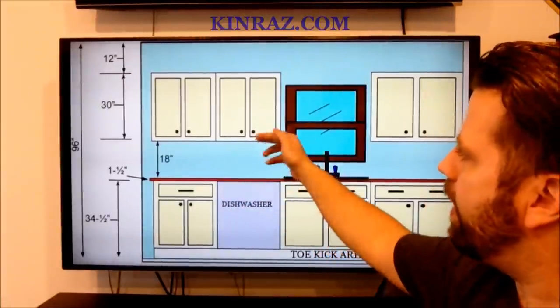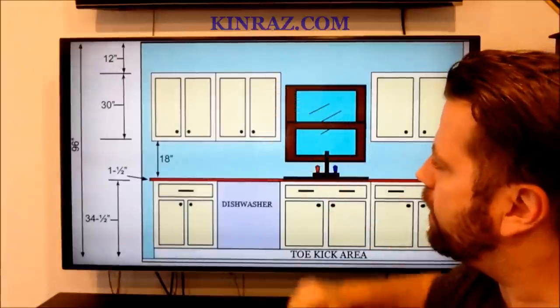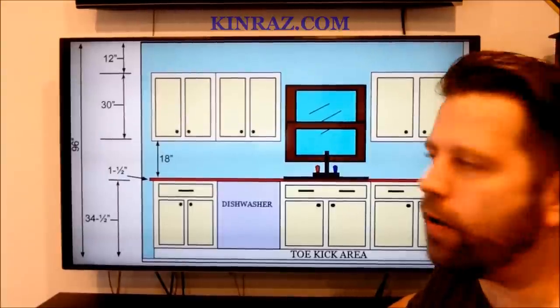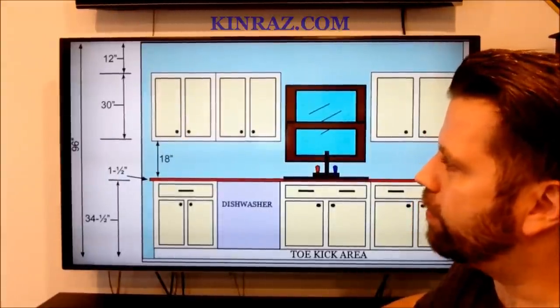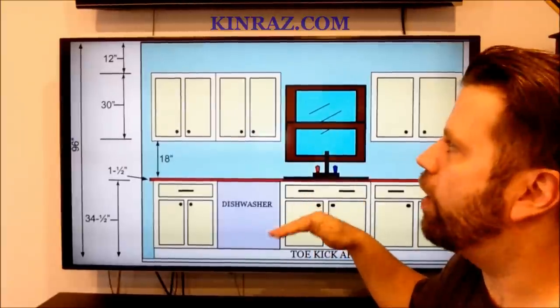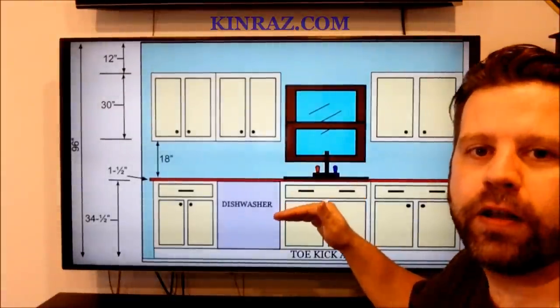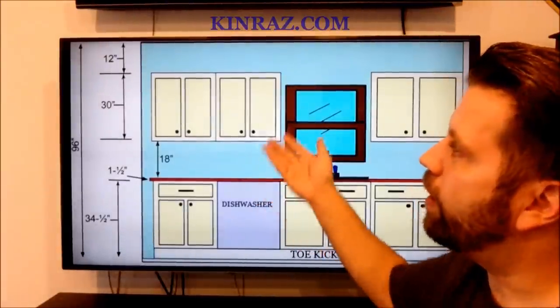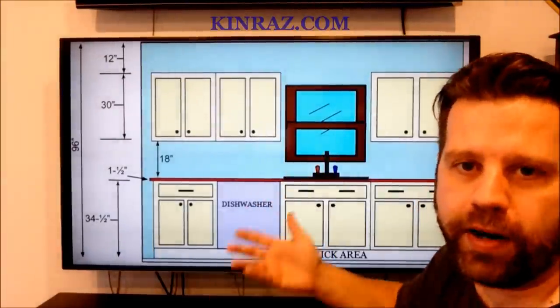And then of course up above that we have a standard size wall cabinet. Those are generally 30 inches tall. Now they do sell them taller. You can get them 33 tall, 36 tall, 39 tall, and 42 inches tall. The 42 inch wall cabinets you may see they do run right up to the ceiling. They butt right up against the ceiling.